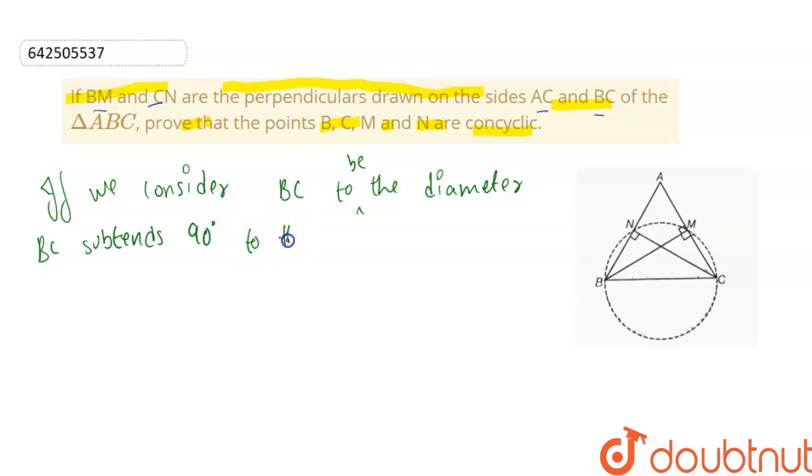To the circle points, M and N should be on a circle. We have considered BC to be the diameter and constructed a circle.